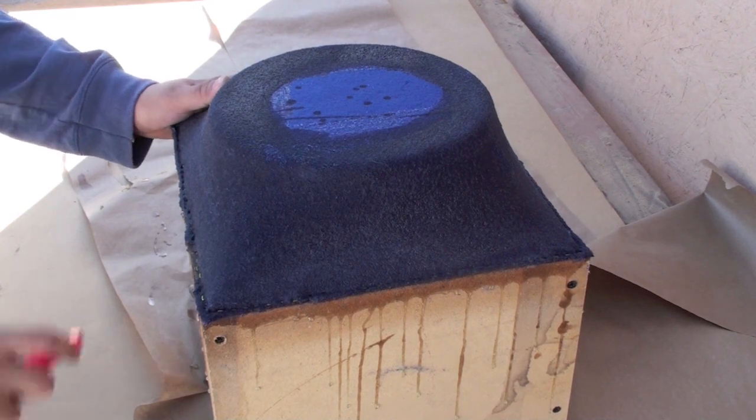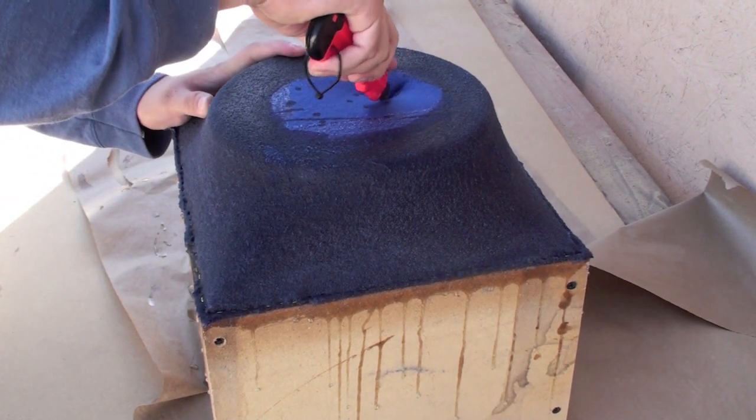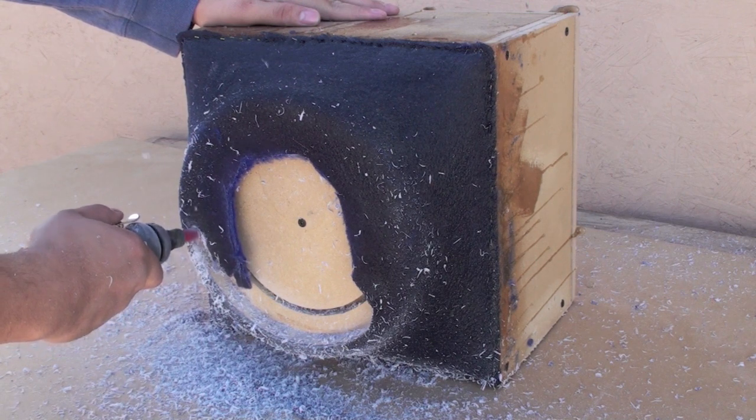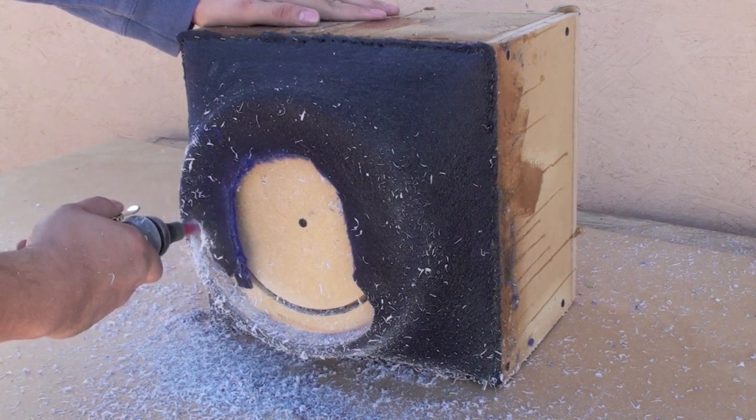When the resin has cured, cut away the fleece with a razor. Cut away the excess material using a die grinder and a trim bit. You can also use a dremel or an air saw.